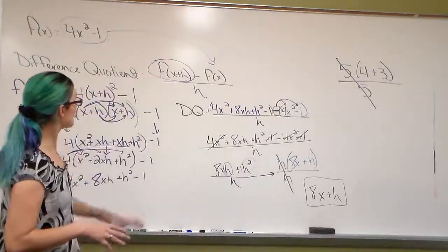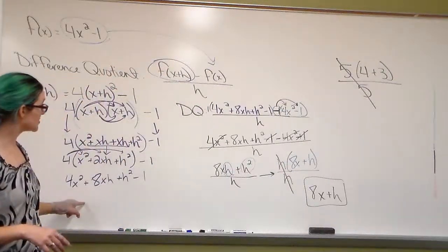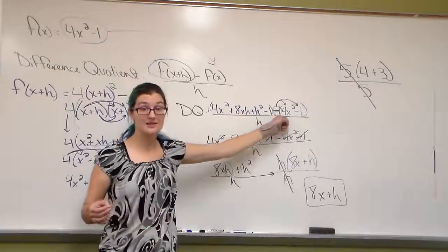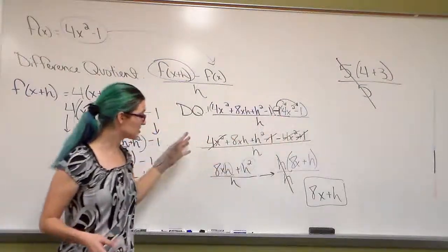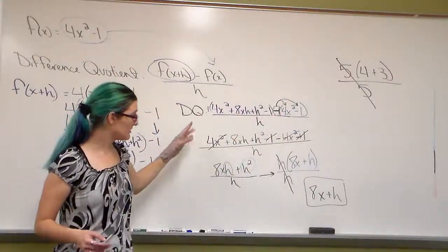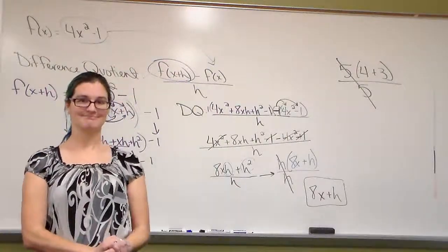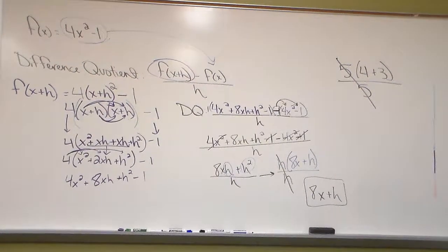This is your difference quotient. Find f of x plus h. Be sure you distribute your negative into f of x. Cancel. Factor. Reduce.